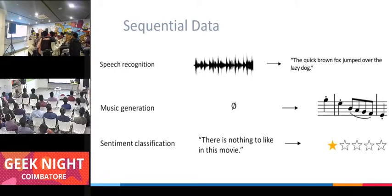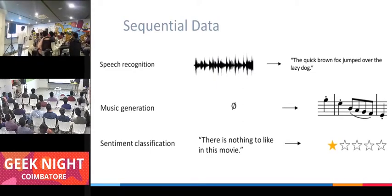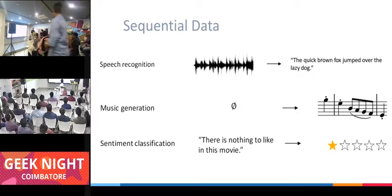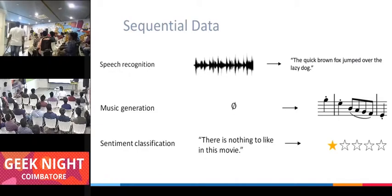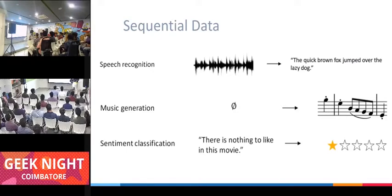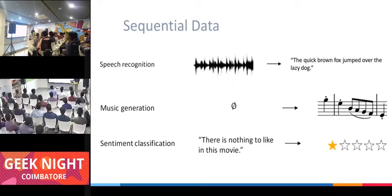Another case is music generation, where you might not even give an input — the model generates music samples. If you train the model using jazz music and try to predict, it will output something not in the training set but related to it, like a new jazz music example. In sentiment classification, this can also be done with convolutional neural networks, but it won't be able to handle things like sarcasm or contextual nuance.